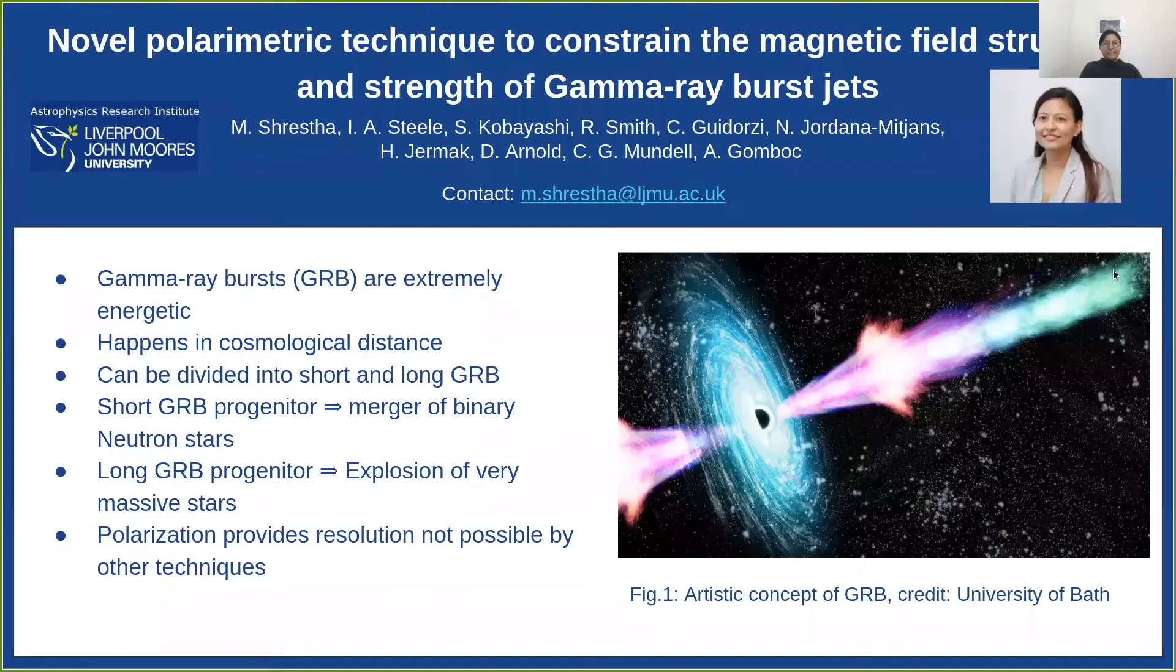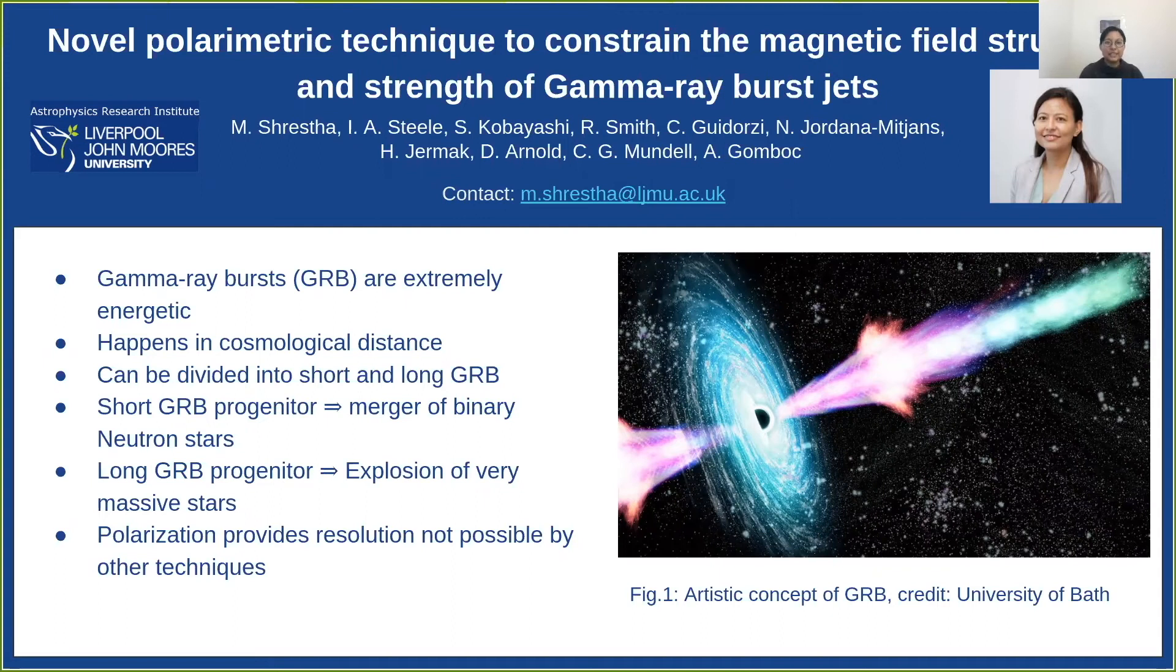Hello everyone. My name is Manisa Srestha and I'm a postdoctoral researcher in Astrophysics Research Institute in Liverpool, UK. I have a poster talking about a polarimetric technique used to constrain the magnetic field structure and strength of gamma ray burst jets.